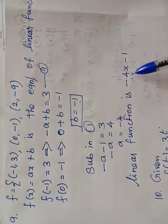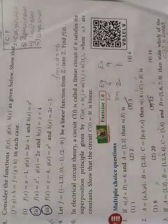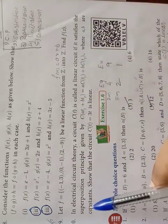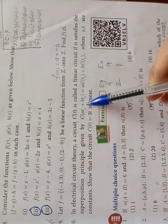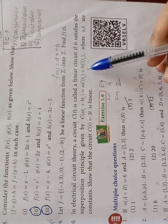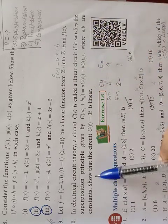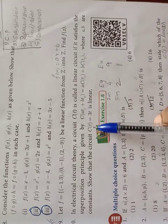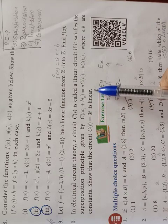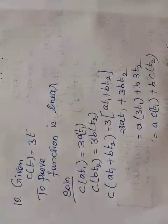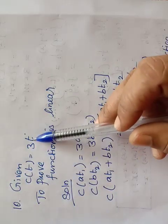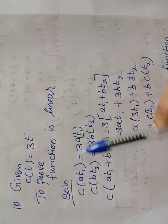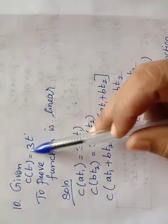The 10th sum: in electrical circuit theory, a circuit c of t is called a linear circuit if it satisfies the superposition principle: c of (a·t1 plus b·t2) equals a·c(t1) plus b·c(t2), where a and b are constants. Given c of t equals 3t, they ask to determine if this is linear. Solution: c of (a·t1) equals 3a·t1, and c of (b·t2) equals 3b·t2.